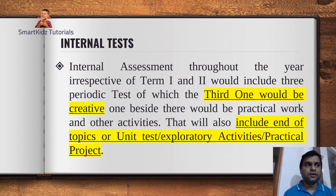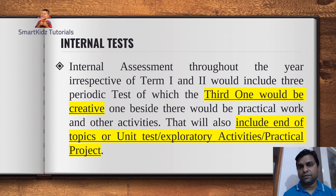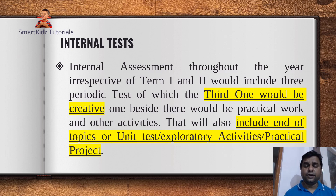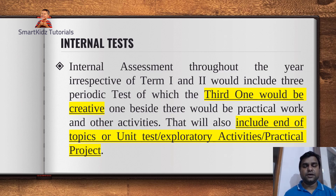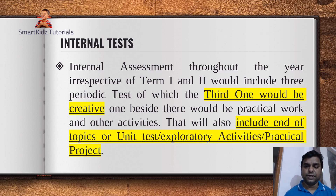Depending on your subject, your teacher asked for a small project or exploratory activity. For example, in Maths, you were given different topics on which you could answer questions. The Goa board had allocated certain guidelines for these projects or activities — the creative or innovative test. So these three together constitute the internal examination: the August exam, the September/October exam, and the project or assignment done in the second term.